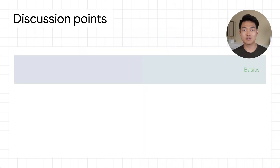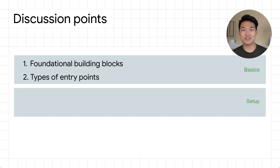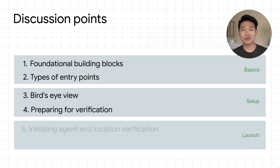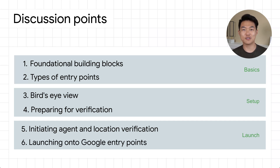We'll discuss the basics which include foundational building blocks of business messages and the different types of entry point groups. Then we'll dive into the necessary setup by looking at a bird's eye view of the whole process from development to verification and all the way to launch. We'll also look at how to prepare for verification and how to request verification on agents and locations and then launch them onto Google Search and Google Maps.